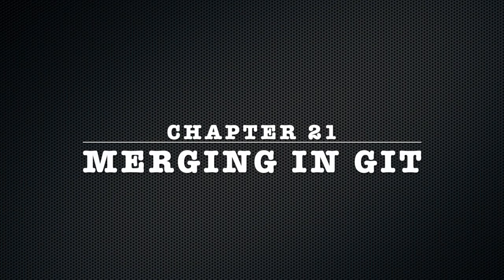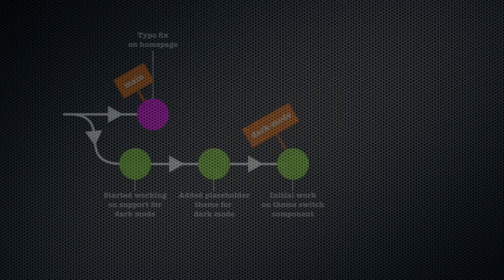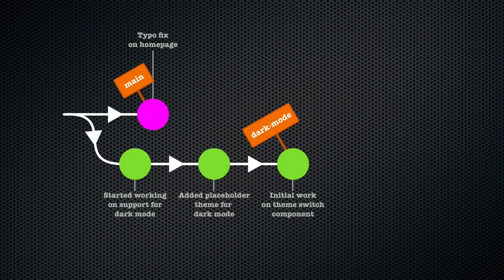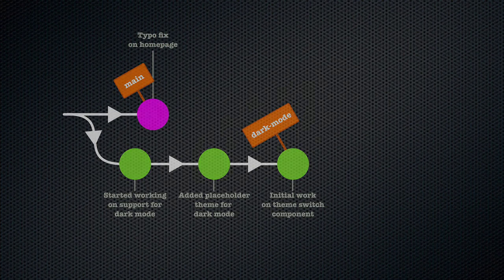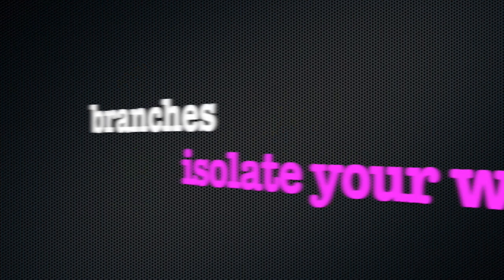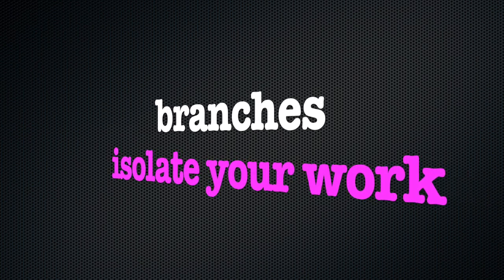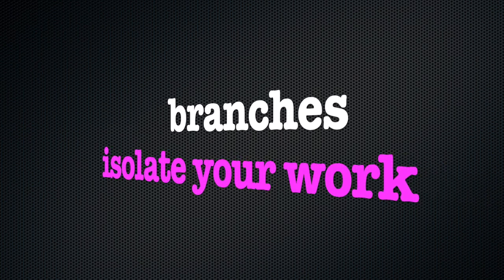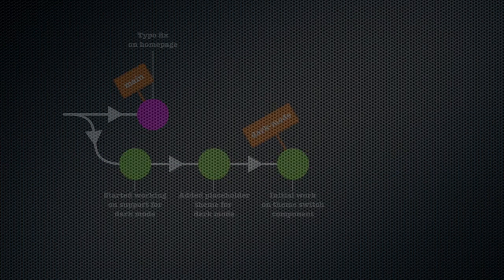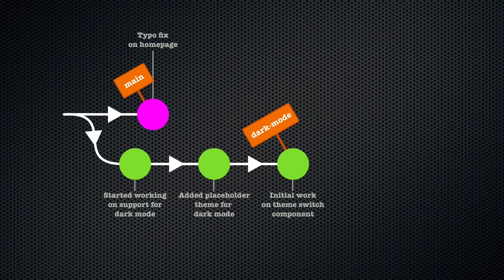Chapter 21: Merging in Git. When we first discussed branching in Git, we said that using branches is all about isolating our work. Just to be clear on this, this is true. That's why we use branches.